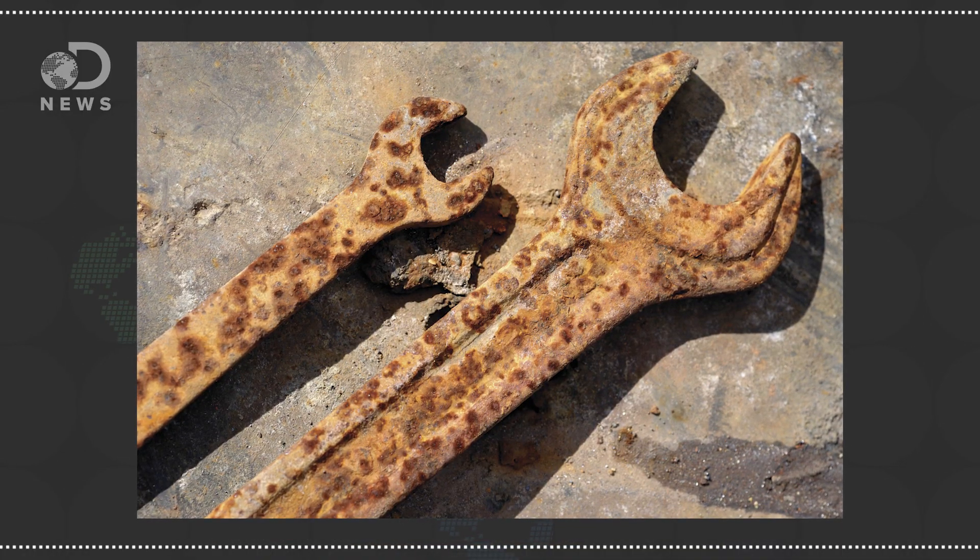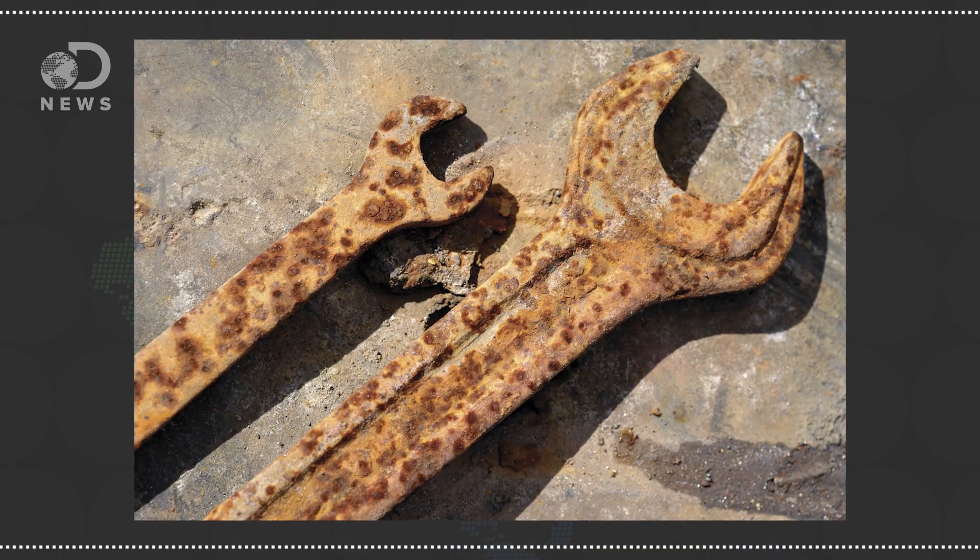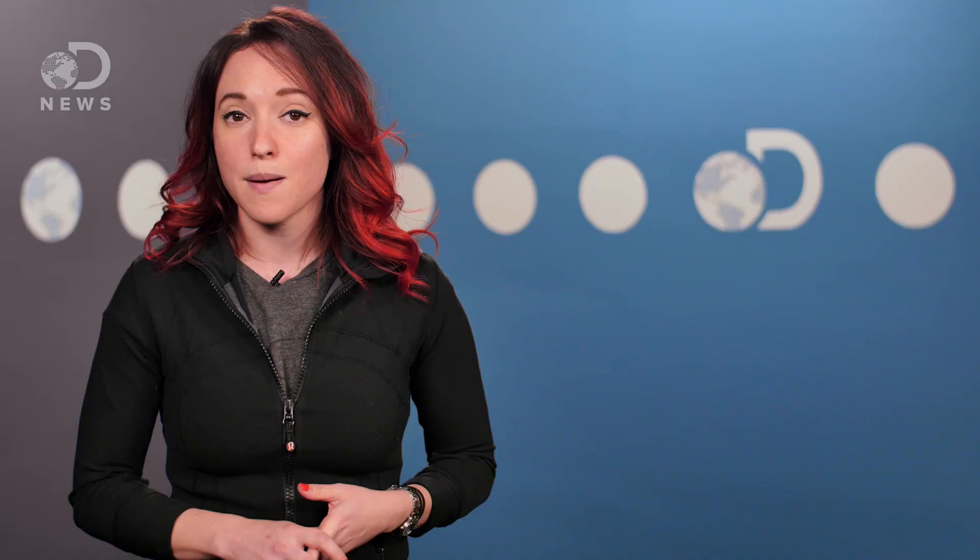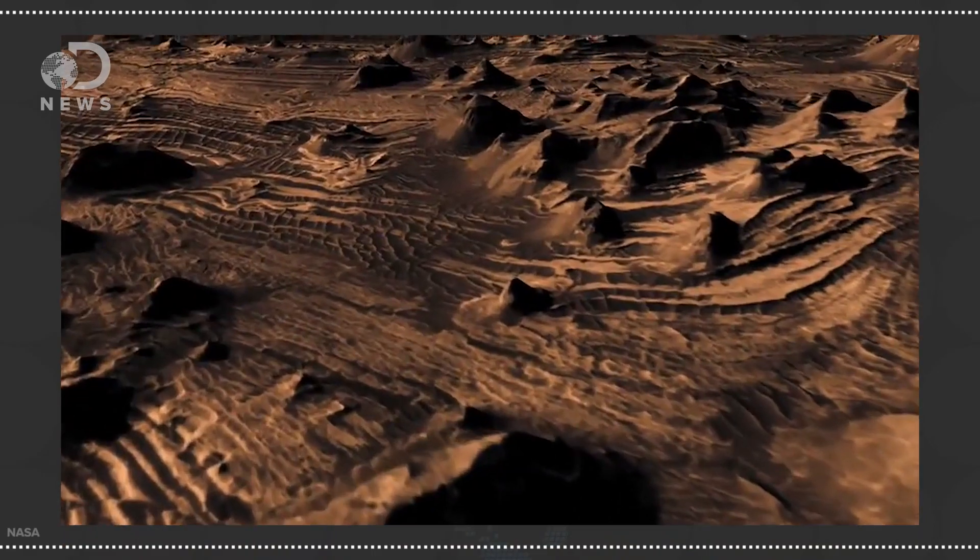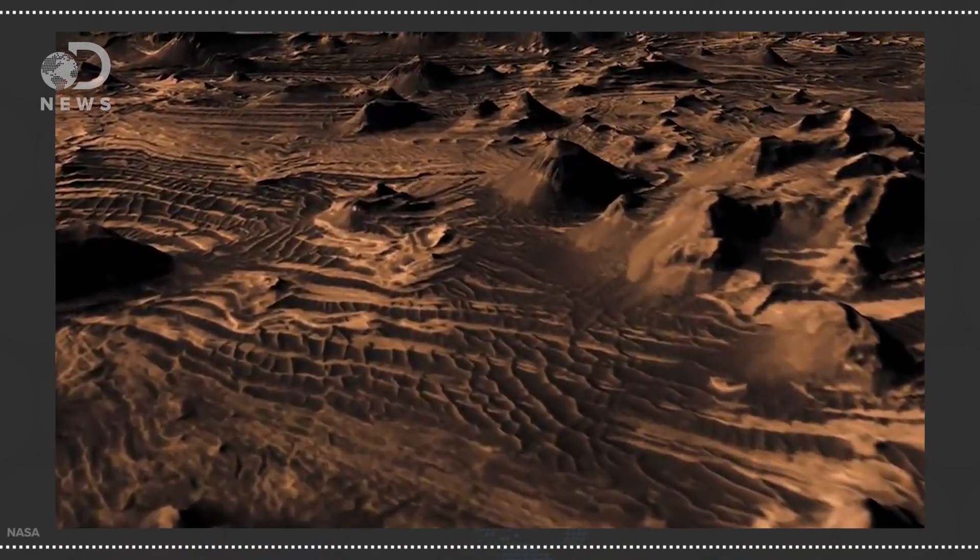Green rust might be an answer. We're all familiar with rust, that lovely orange-reddish, corrosive thing that happens to iron metals when left exposed to moisture and oxygen in the air. But when there isn't enough oxygen to fully oxidize the iron minerals, say in Mars' carbon-dioxide-rich atmosphere, the effect is slower and develops into less complete forms of rust, called green rust.